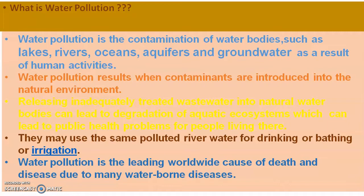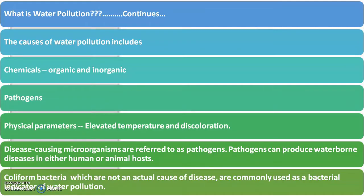The use of polluted water causes death and disease in human beings, as people living near polluted environments suffer from different types of waterborne diseases. Different causes of water pollution include chemicals that may be organic or inorganic, different types of pathogens, and physical parameters such as elevated temperature and discoloration. These disease-causing microorganisms, called pathogens, can produce waterborne diseases in humans as well as animals.